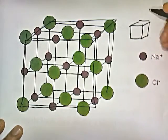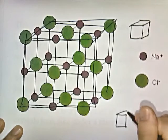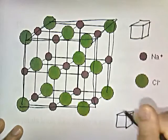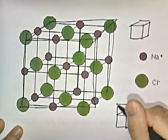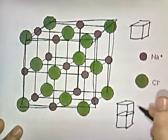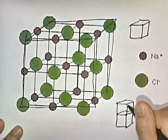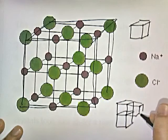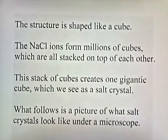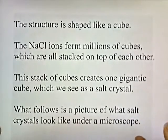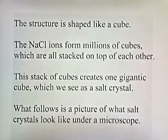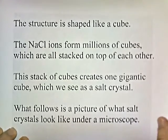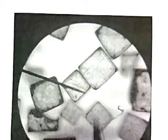The cubes pile up on top of each other — one cube forms, then another cube on top of that, eventually producing a gigantic cube. So when you stack one cube on top of another, you get a big cube. And when we see this big cube, we see it as a crystal. Salt crystals viewed under a microscope have a boxy, cubic shape, because all the individual atomic-level cubes are stacked on top of each other to make one great big cube.